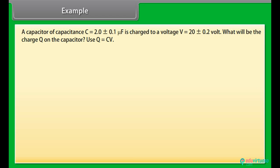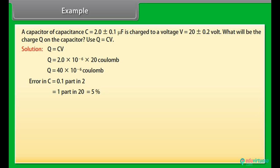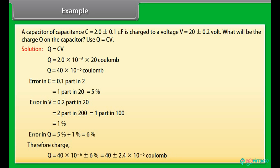Example. Let's take an example of errors. A capacitor of capacitance C = 2.0 ± 0.1 μF is charged to a voltage V = 20 ± 0.2 volt. What will be the charge Q on the capacitor? Use Q = CV. Let us see the solution. Q = CV. On calculating we get Q = 40 × 10^-6 coulomb. Error in C = 0.1/2 = 5%. Error in V = 0.2/20 = 1%. Error in Q = 5% + 1% = 6%. Therefore charge Q = 40 ± 2.4 × 10^-6 coulomb.